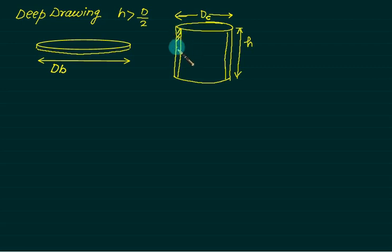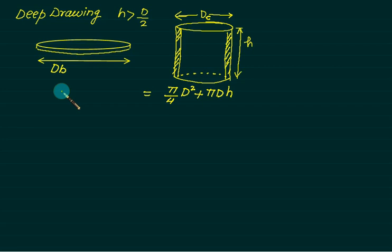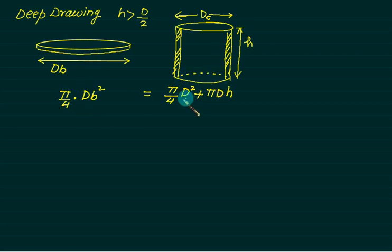We need material at the side wall and at the bottom. The total material required at the bottom is (π/4)·D², and the material required on the circumference is π·D·H. Since metal forming is a volume-conserving process, no material is wasted. So the total material required must equal the material available, which is (π/4)·Db².